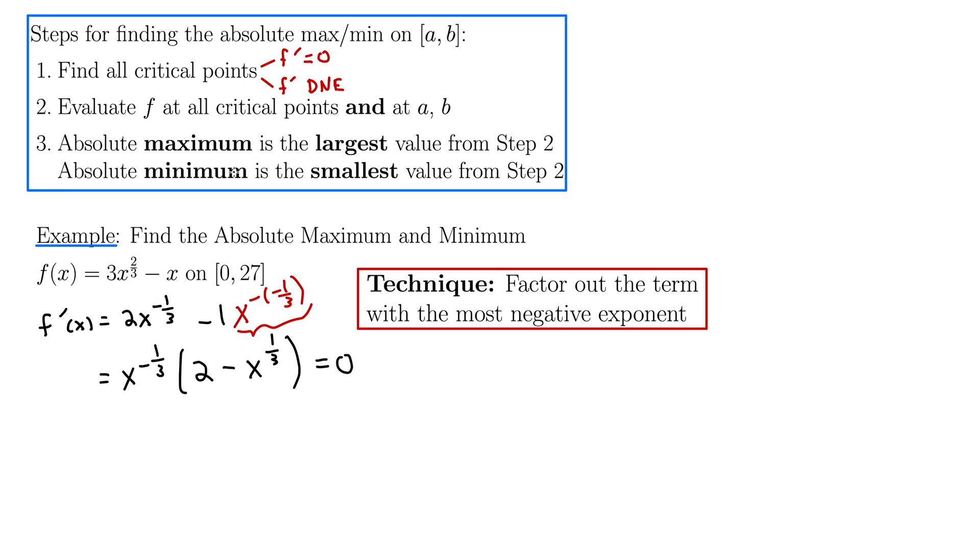Now we want to take this whole thing and set it equal to zero and solve that. And note that we can see right away that x equals zero for this term is where the derivative does not exist. And then we set the second term equal to zero. So we get two equals x^(1/3), cube both sides to get eight equals x. So our critical points. Now, let's just do a quick check to make sure those are both in the domain of our function. They both are. So our critical points are eight and zero.